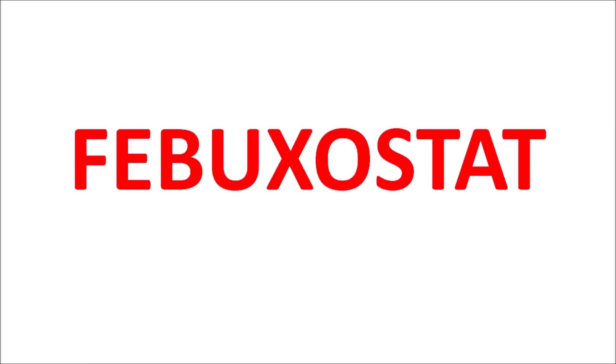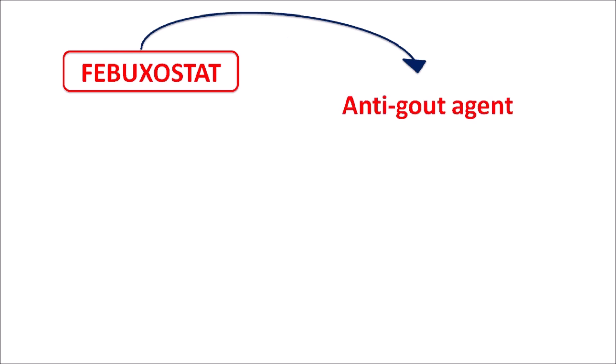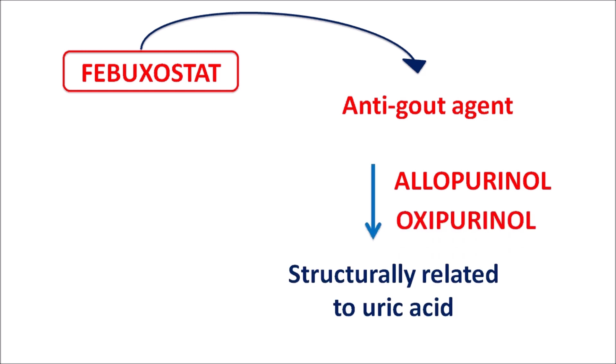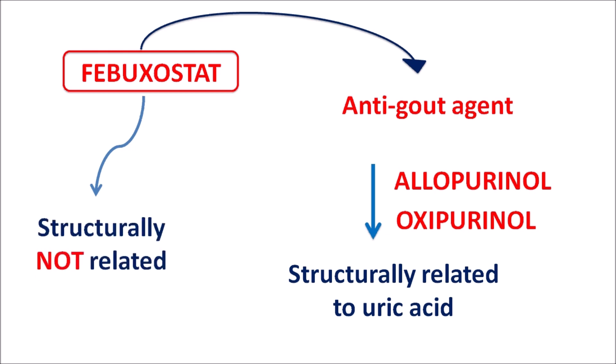Today we are going to discuss febuxostat. This is one of the anti-gout agents. Other drugs in this category, such as allopurinol and oxypurinol, are structurally related to uric acid, and they can produce side effects by interfering with enzymes involved in purine and pyrimidine synthesis. Febuxostat is structurally not related to uric acid, so it does not produce those side effects, but it can produce some serious cardiac events in patients.